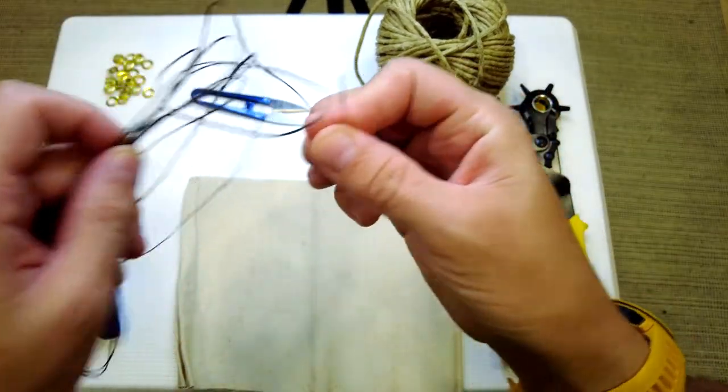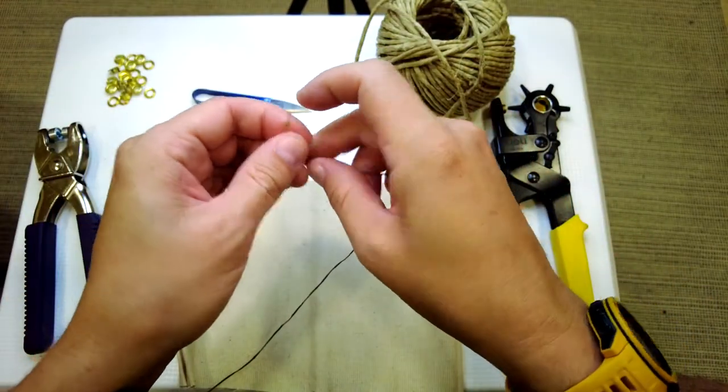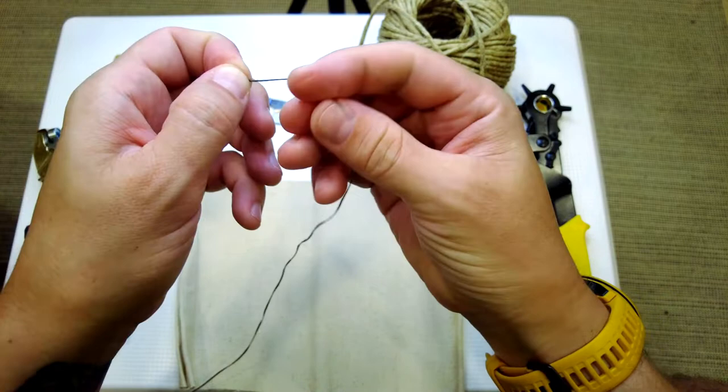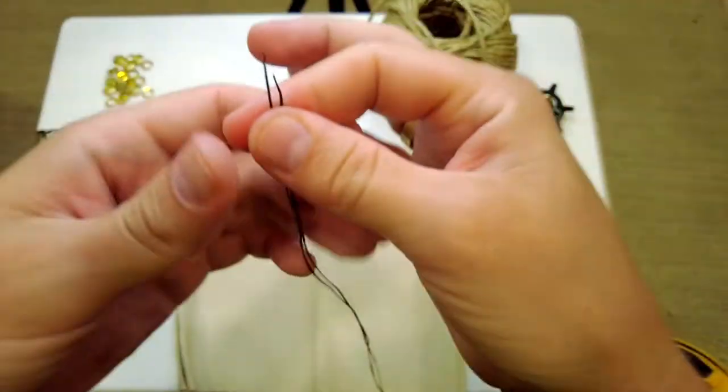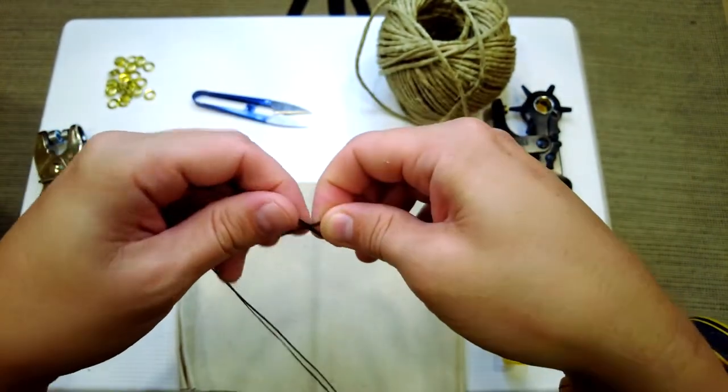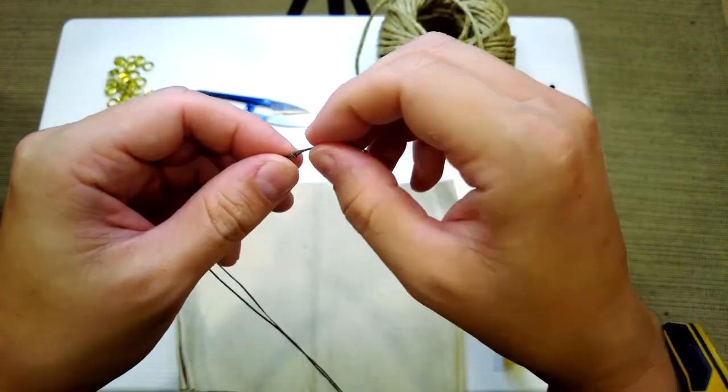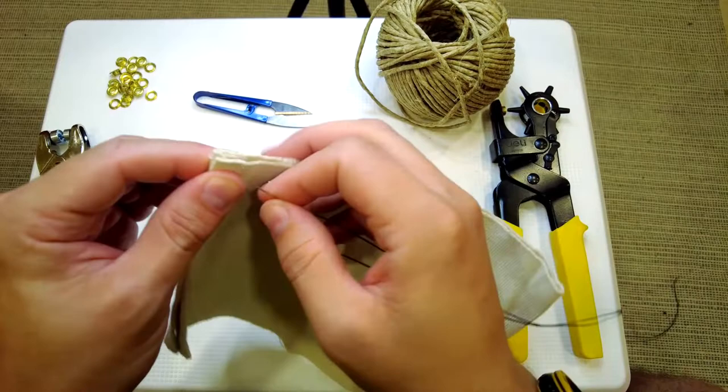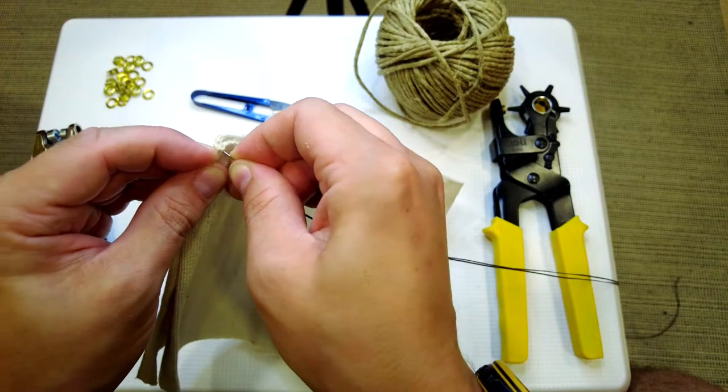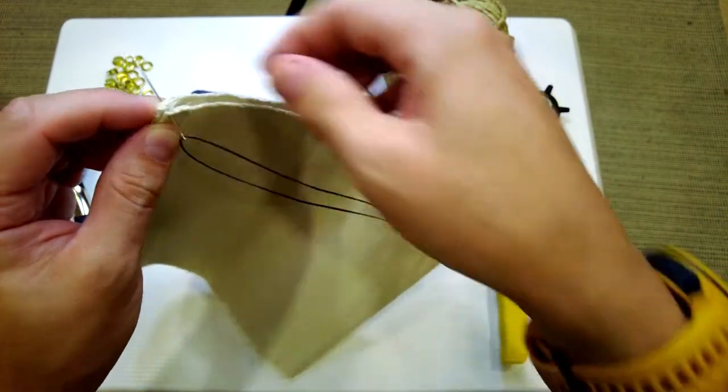Get our needle and thread. And what I'm going to do on the end of the thread is just tie a little knot. So I'm going to start at the top here and work my way down. So on the thicker parts, do be careful. You're going to get jabbed with the needle.